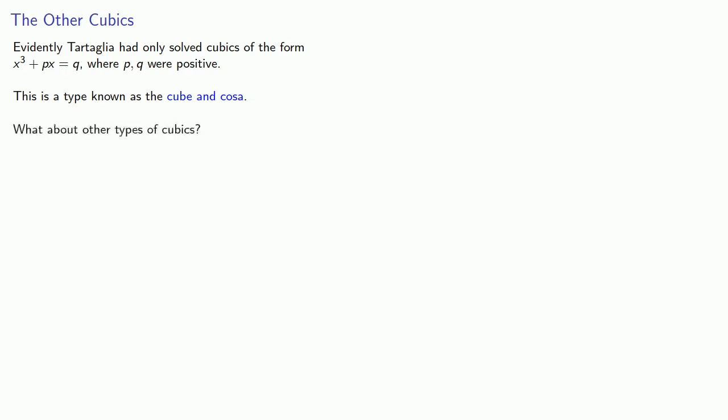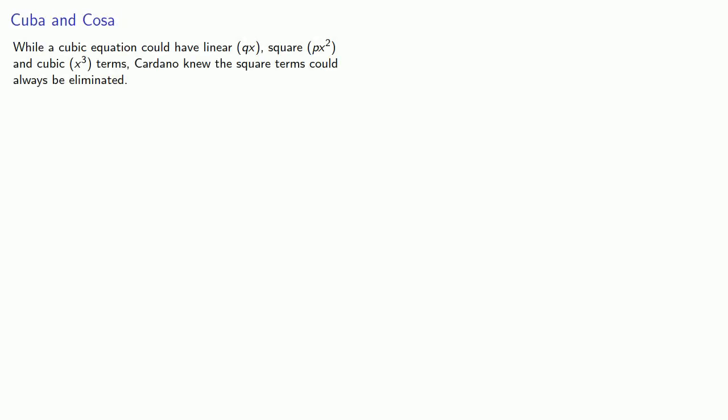But what about other types of cubics? While a cubic equation could have linear, square, and cubic terms, Cardano knew the square terms could always be eliminated.